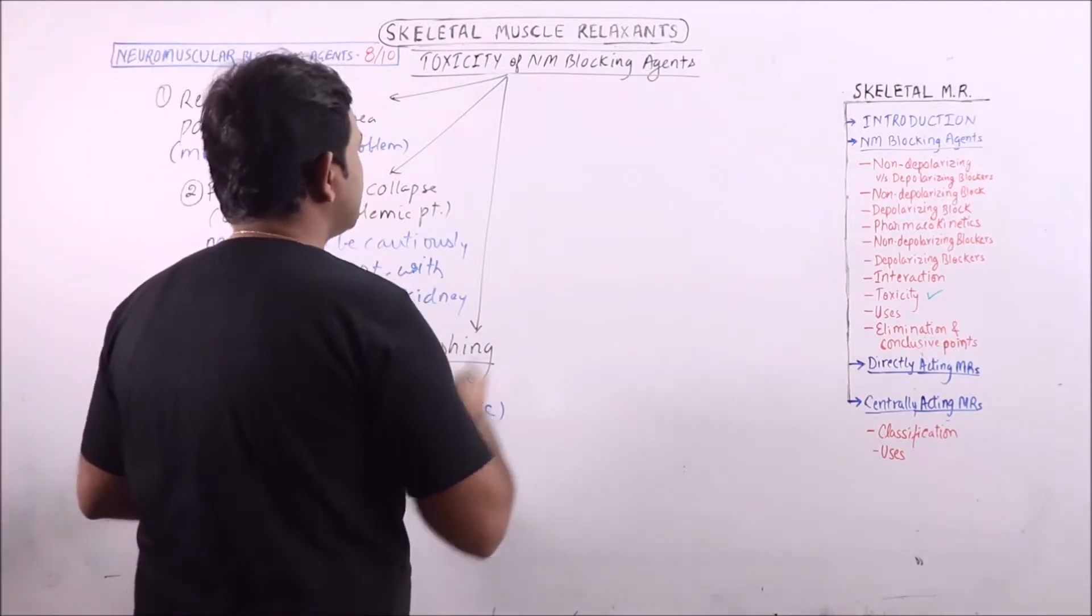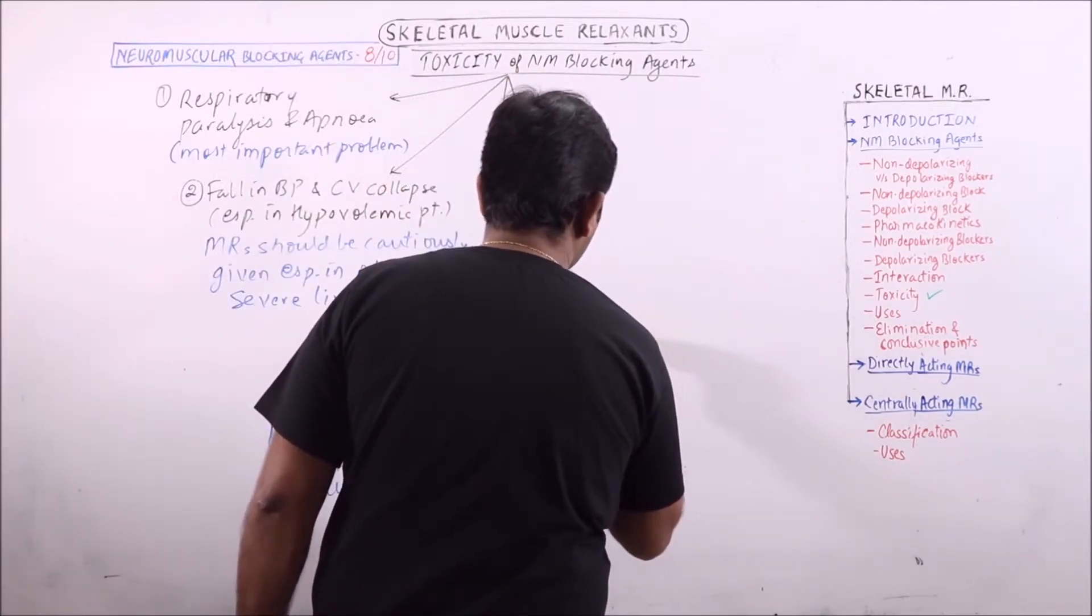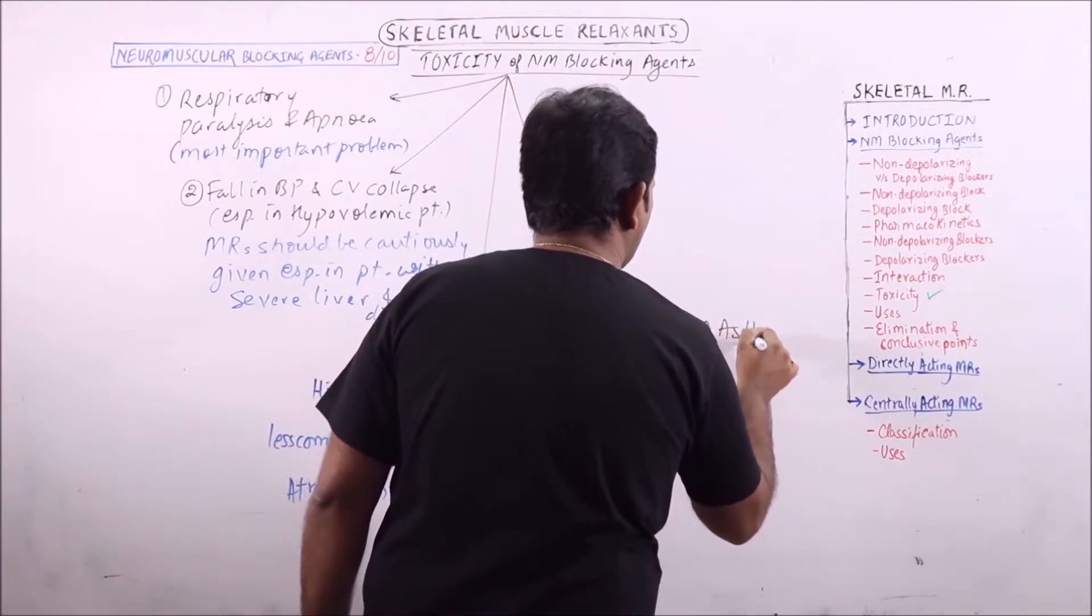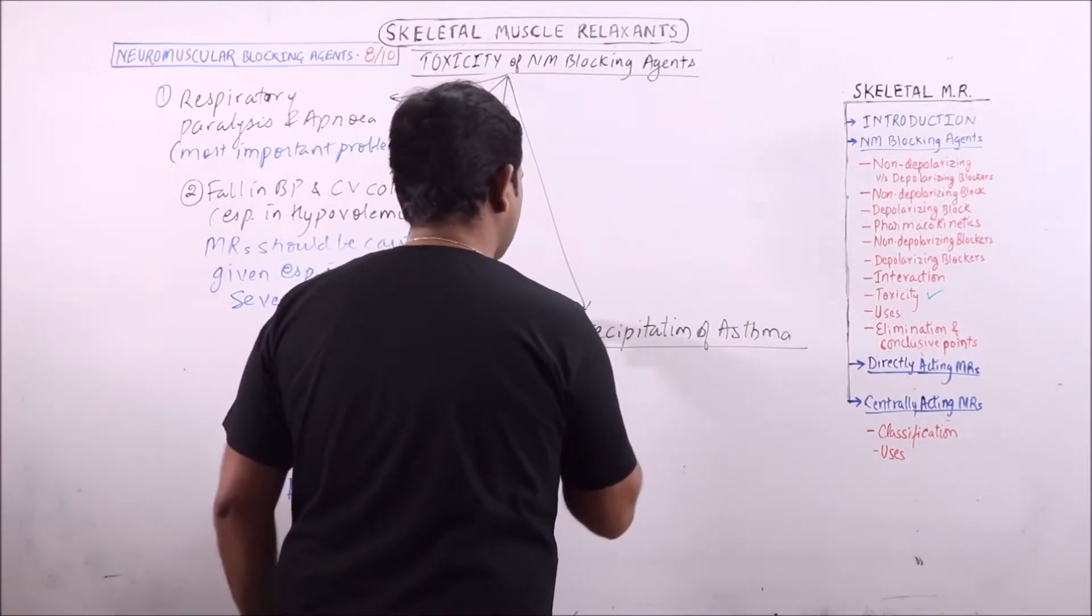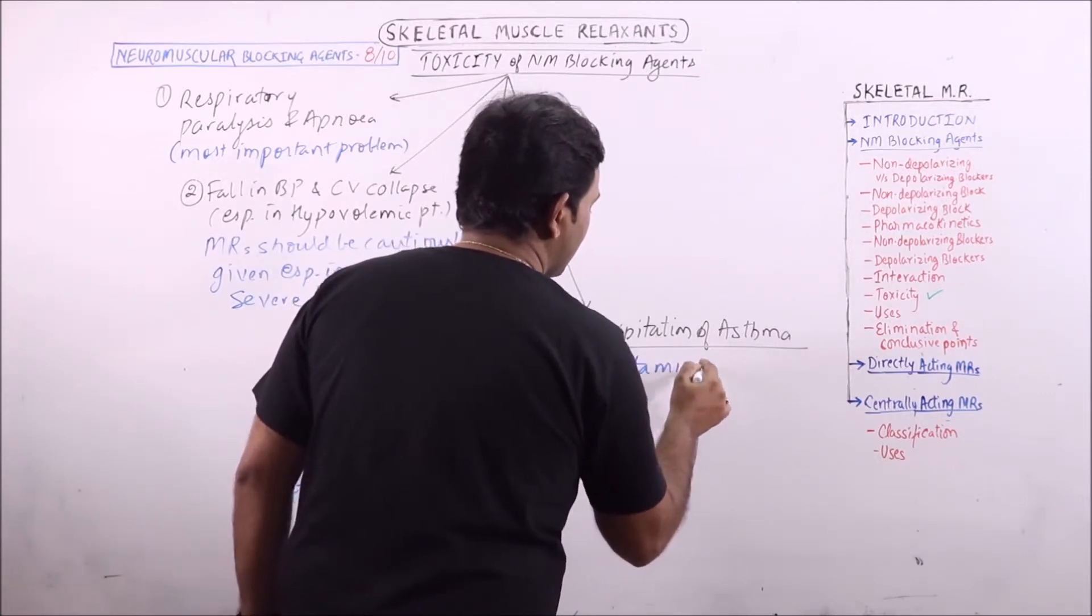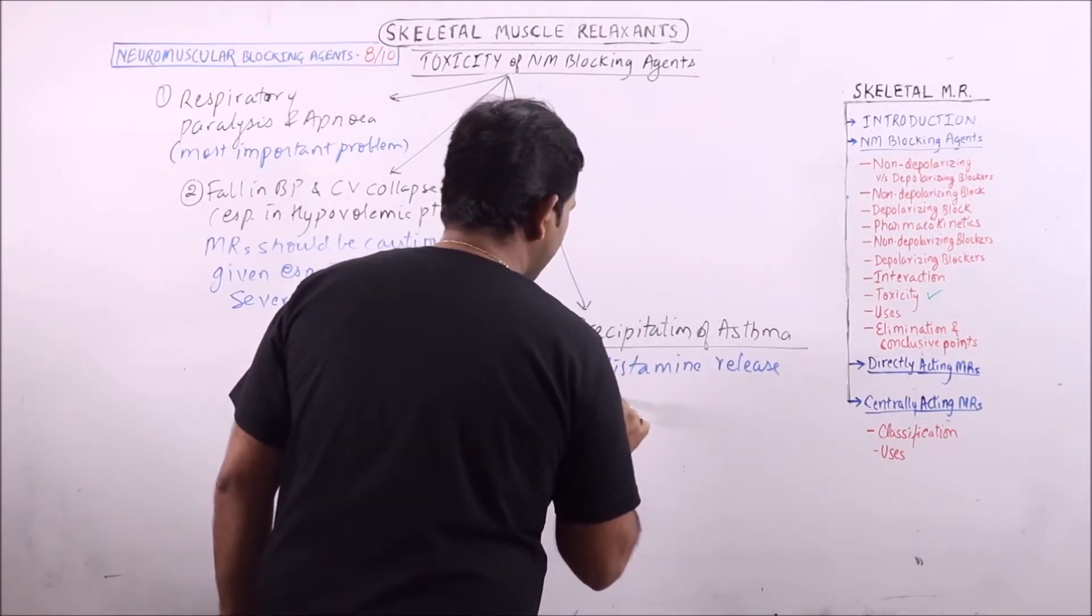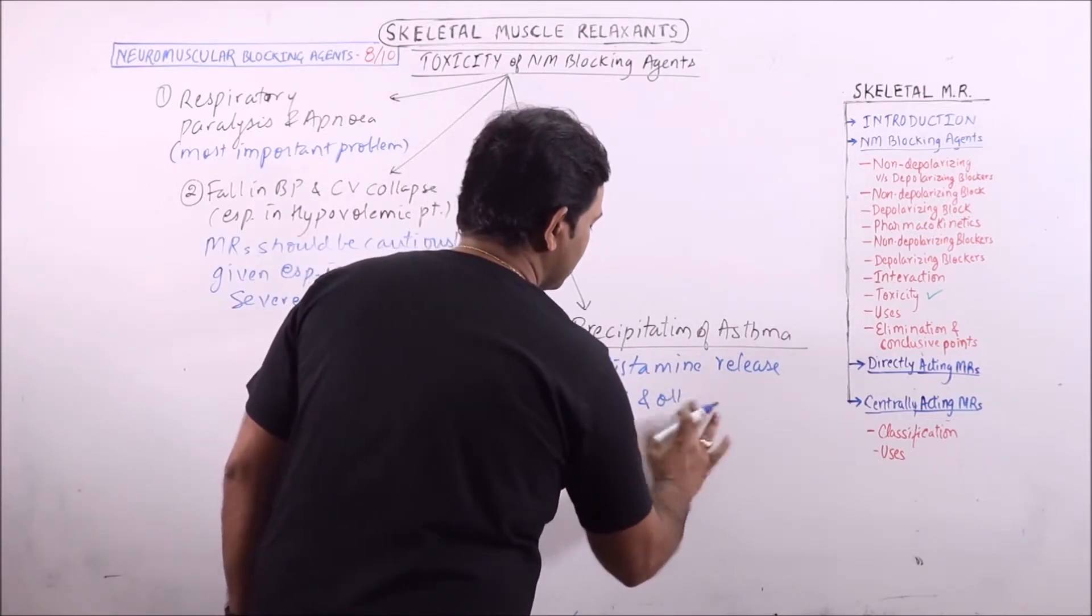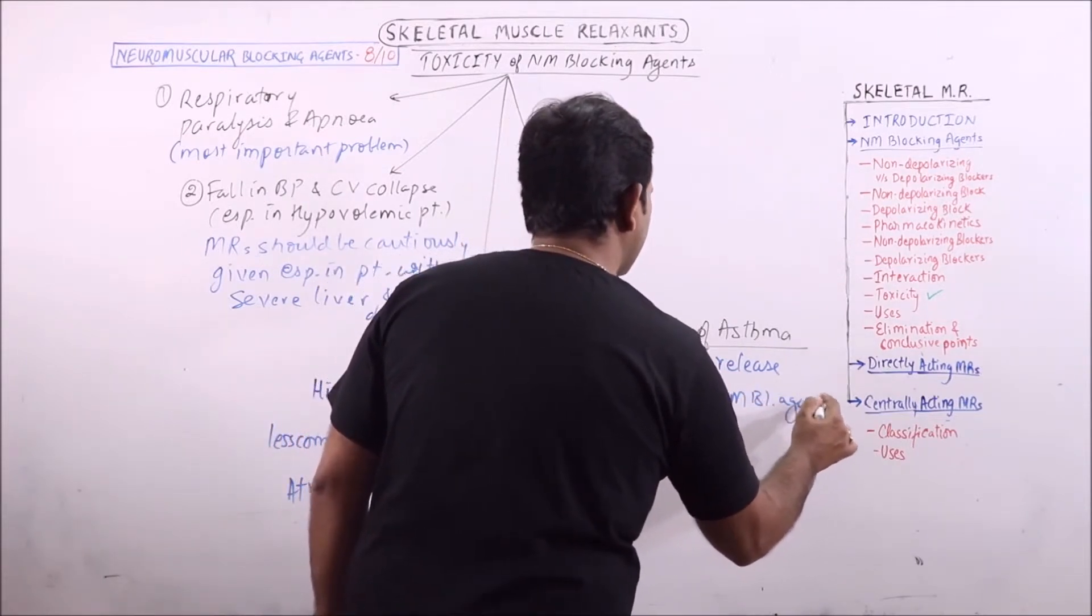Next is precipitation of asthma. Again, this is because of histamine release. We can observe this in case of DTC and some other neuromuscular blocking agents.